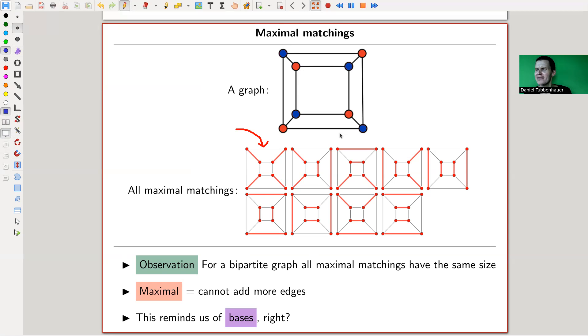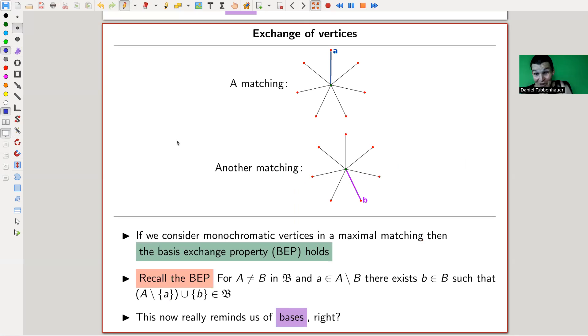And this somehow reminds us of bases, right? It kind of reminds us of the defining property of a matroid. Like bases, they're all of the same size. And this was essentially the upshot of a matroid or the definition of a matroid or a property of a matroid, whatever you want to call it. This looks terribly like this is exactly the same. So we should be able to somehow cook up a matroid from matchings. And that's exactly the transversal matroid.